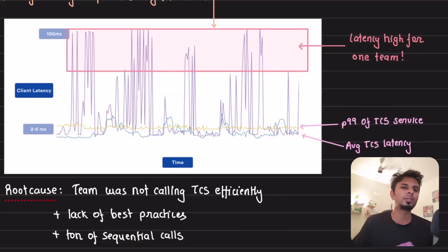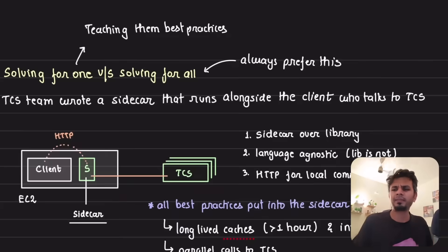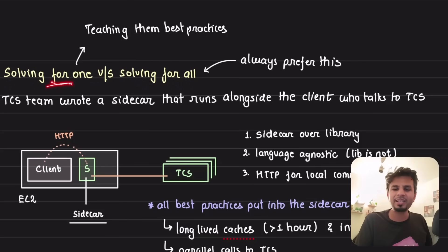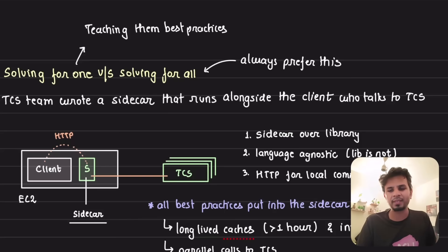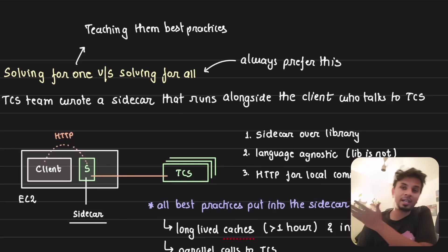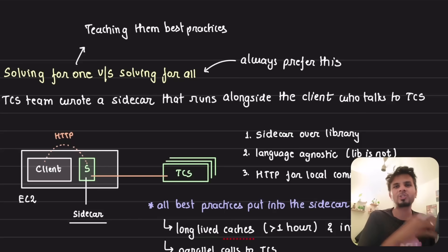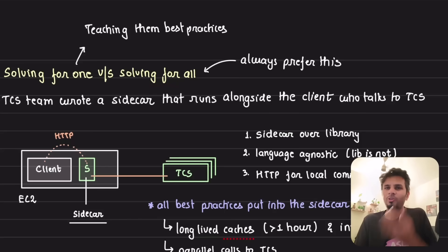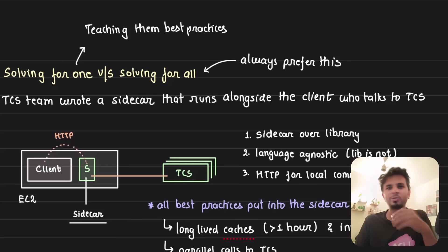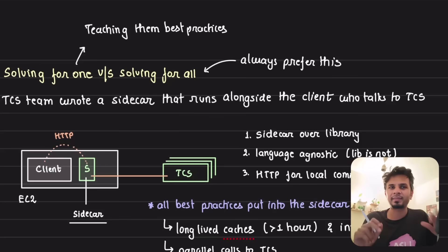How do you fix it? One approach is to reach out to them and ask them to change their code — tell them the best practices, let them use it. But the better option is to solve for all, not just one. Today it might be service A facing this problem; tomorrow it might be ten other services that didn't follow best practices.